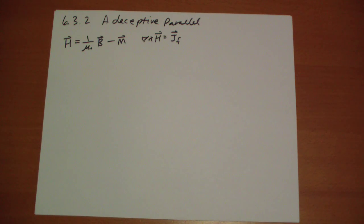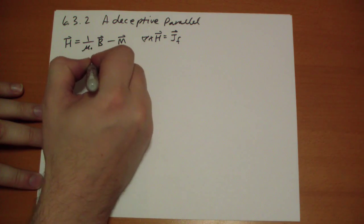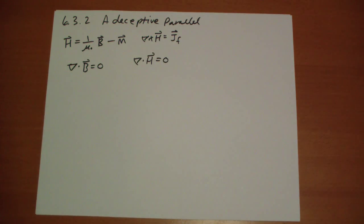And looking at this, you're tempted to say that the H field behaves exactly like the B field. So since the divergence of the B field is equal to 0, then the divergence of the H field must be equal to 0 as well.